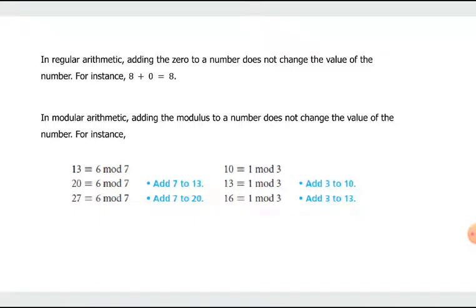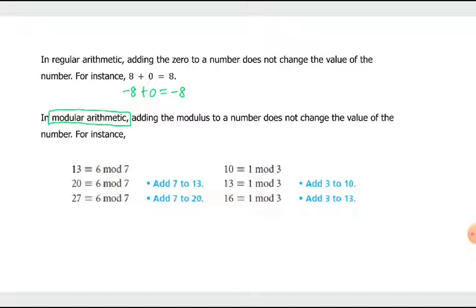Here is an important property in modular arithmetic. In regular arithmetic, whenever we add 0 to a number, the result is still the same number — for example, 8 plus 0 is still 8, and negative 8 plus 0 is still negative 8. So 0 does not change the value. In modular arithmetic, what numbers can we add to another number such that the value doesn't change?